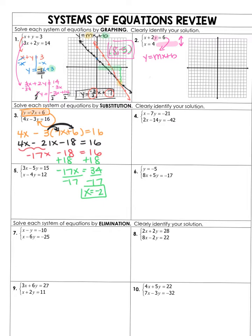Now we need y. We just got our x. I'm going to go back up — you could use either equation, but I'm going to use the top one because it literally says what y equals, and I now know x is negative 2. So I replace x with negative 2: negative 2 times 7 is negative 14, and negative 14 plus 6 is negative 8. Your final answer needs to be written as a coordinate — x first, then y. My x was negative 2, my y was negative 8. So your solution to number 3 is negative 2, negative 8.